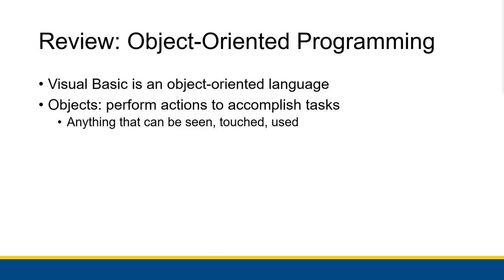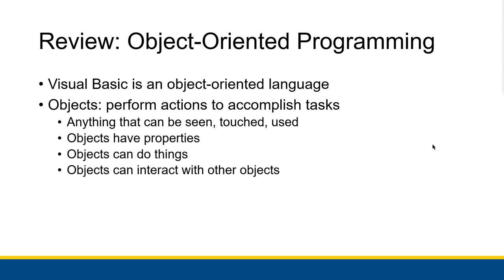You might remember that at the beginning of the course I described Visual Basic as an object-oriented programming language. An object-oriented programming language is one where everything revolves around objects. Objects are things in the code that perform actions to accomplish tasks, so anything that can be seen, touched, or used in some way in the code is an object. Objects have properties that describe them, there are actions they're able to take, and they can interact with other objects.